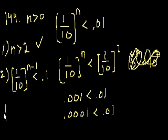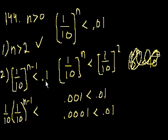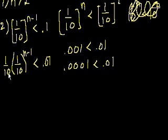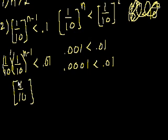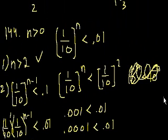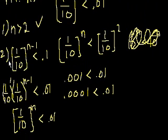You get 1 tenth times 1 tenth to the n minus 1 is less than, what's 1 tenth times 0.1? It's 0.01. And what does this simplify to? You have 1 tenth to the first power times 1 tenth to the n minus 1, you add the exponents. This is equal to 1 tenth to the n is less than 0.01, which is the statement that we originally had. So statement 2 is actually equivalent to the original problem statement.